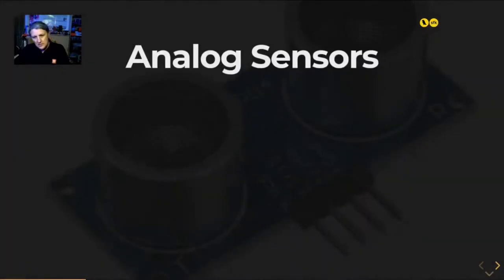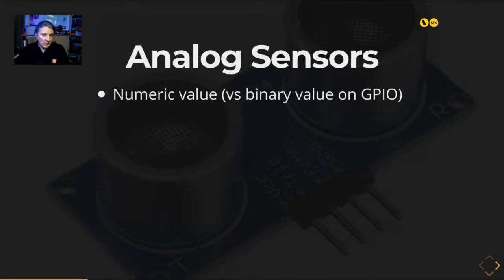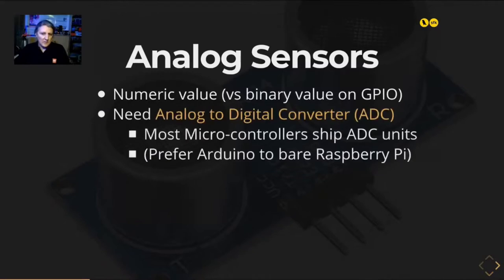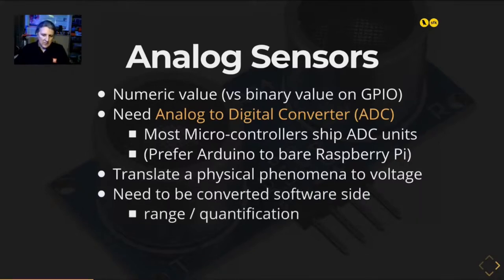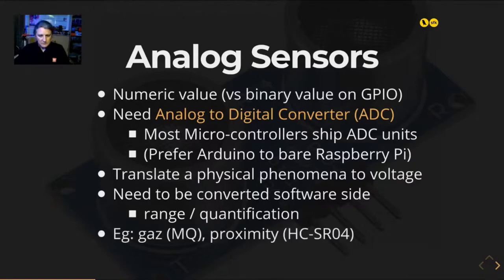Analog sensors produce a numerical value — not a Boolean. You need an analog-to-digital converter (ADC). Most microcontrollers have this, but Raspberry Pi does not — you need an extra component. The sensor translates a physical phenomenon to a voltage, which is then converted in software. You need computation to understand what it's measuring in reality. Examples include gas sensors like MQ sensors and proximity sensors, which can be plugged in if you have ADC input.